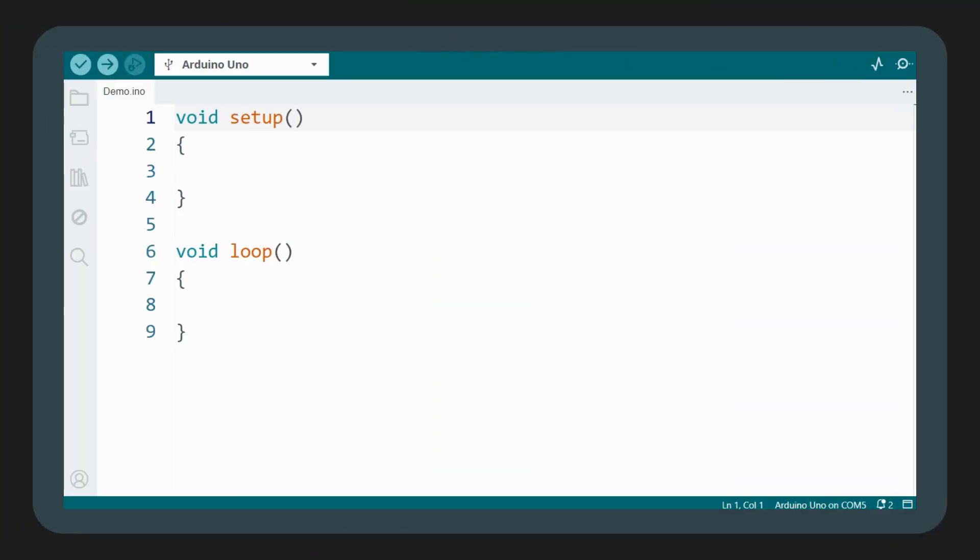Next, let's move on to programming our Arduino. We'll begin by declaring an integer variable named distance and a long variable named duration. The long data type is used when we need to store large integer numbers that exceed the capacity of the int type.